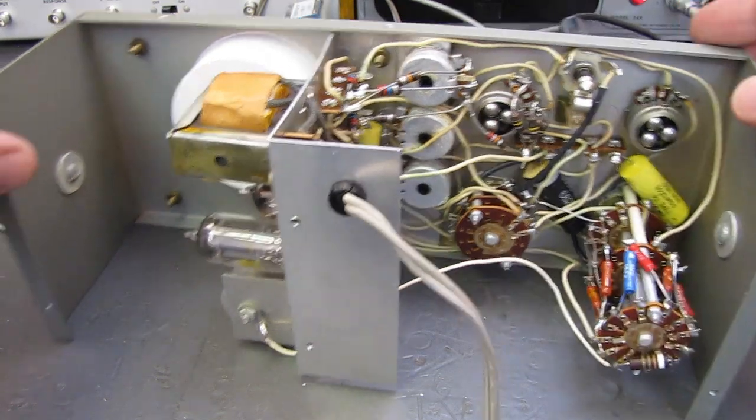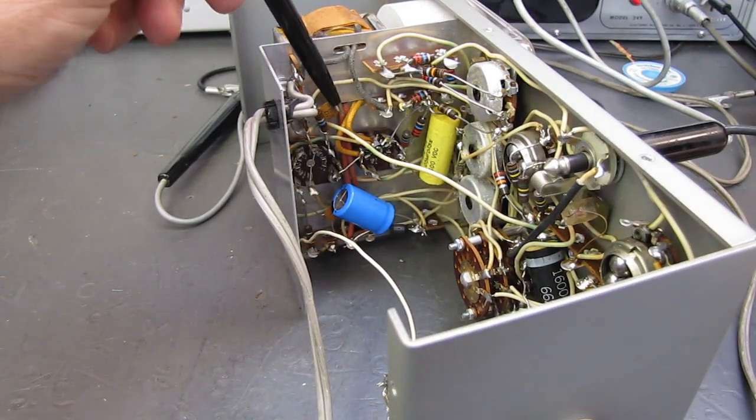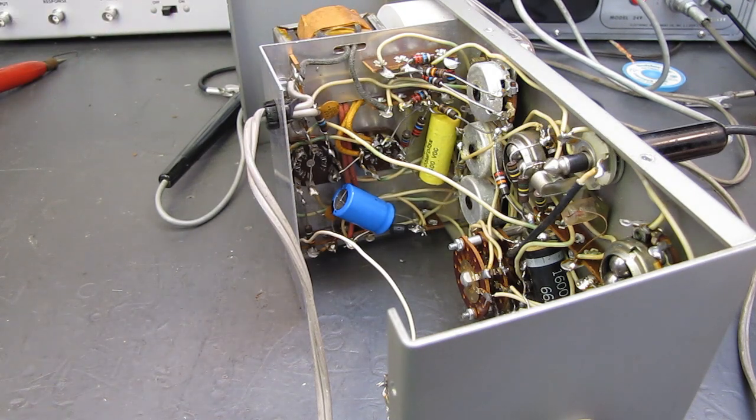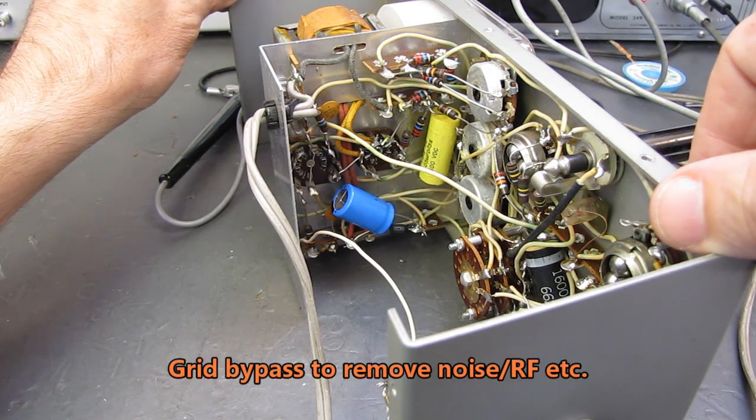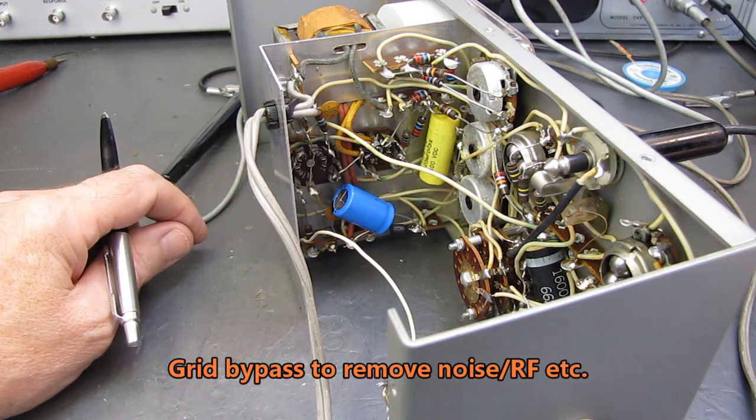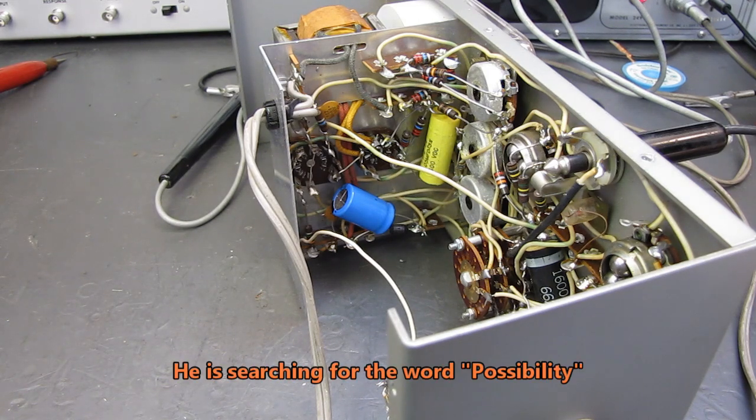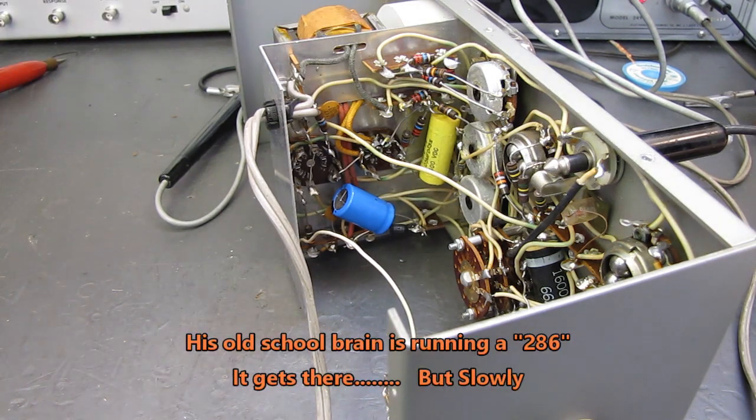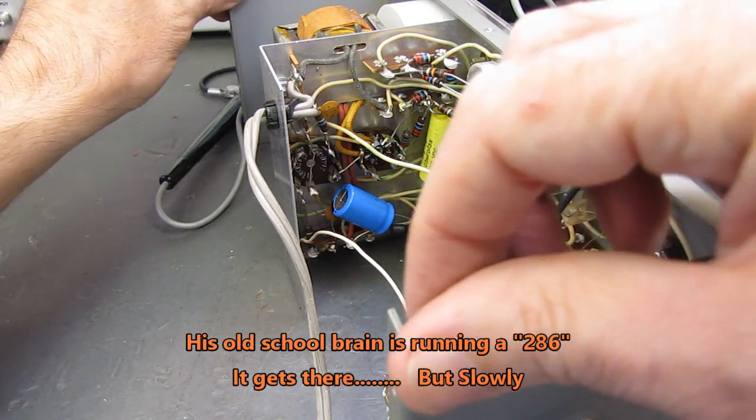The only other capacitors that haven't been changed in here are a couple of disc ceramic caps. They're a couple hundred volt rated, and they're only seeing a handful of volts in their configuration. They're across the grids of the 12AU7 bridge tube. While it's conceivably could they be bad? Yeah. But I seriously doubt that disc ceramics are breaking down at grid voltages.